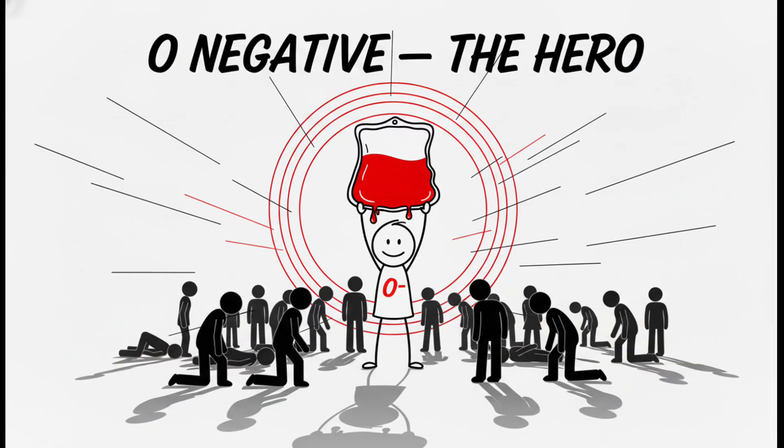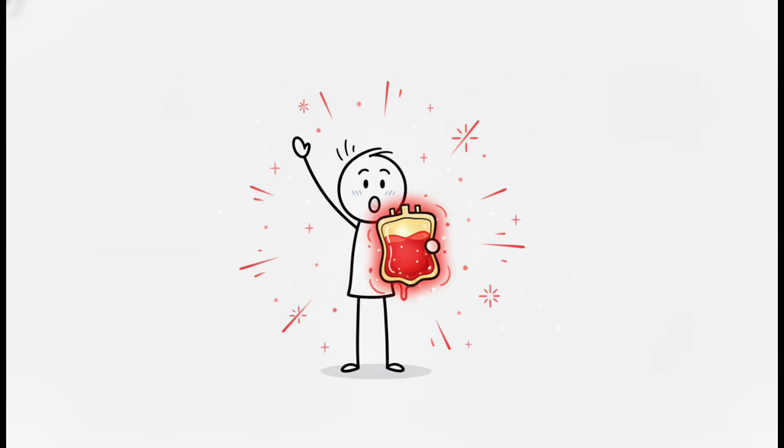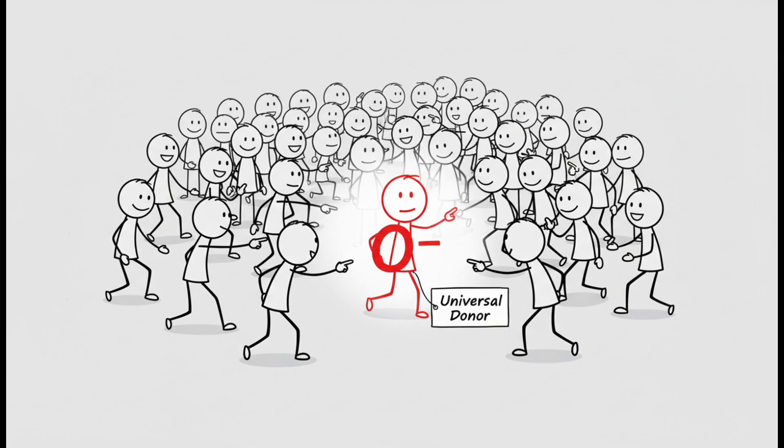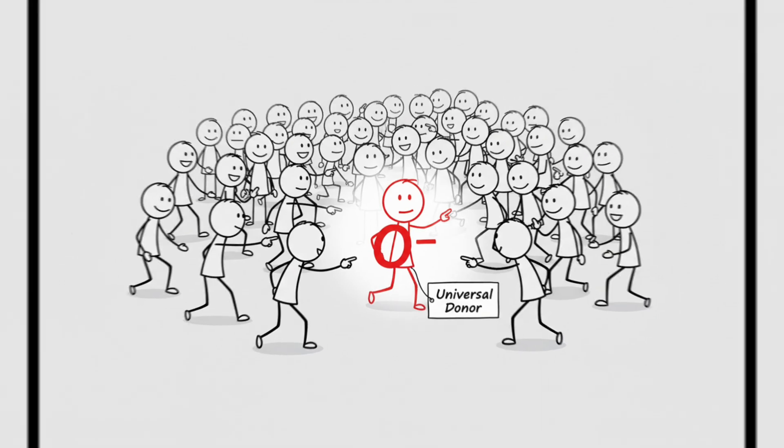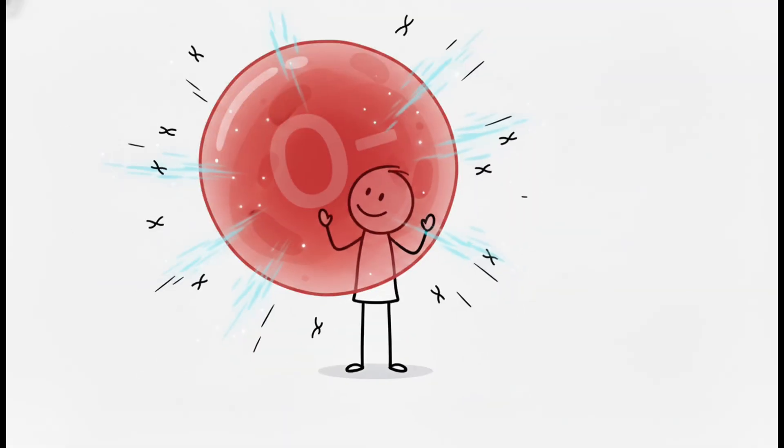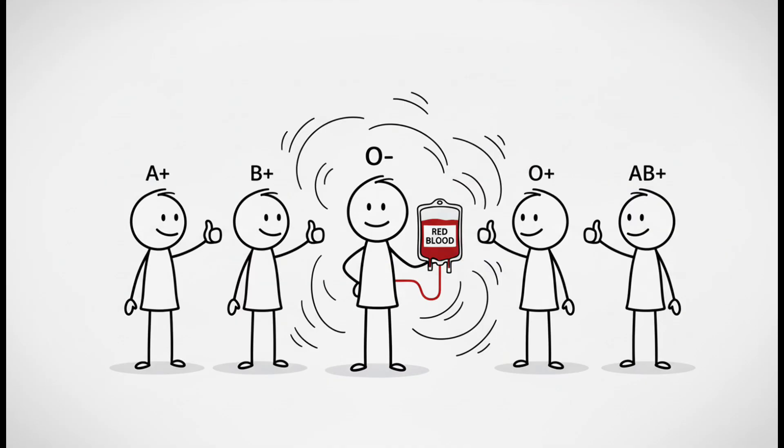O negative. O negative is liquid gold. Found in less than 7% of people, it's the universal donor. With no A, B, or RH antigens, O negative blood is biologically invisible. It can be given to anyone without triggering an immune reaction.